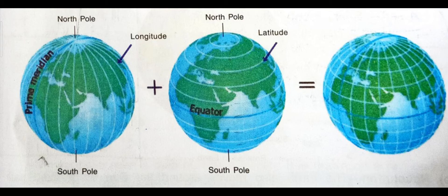Look at the second picture. The horizontal imaginary line drawn around the globe exactly halfway between the North Pole and South Pole is called the equator. The equator divides the earth into two parts, and it is the base line for drawing the parallels of latitude, or lines of latitude.